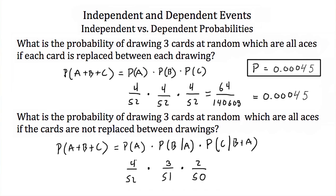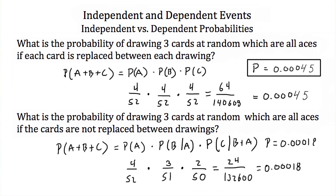4 times 3 is 12, times 2 is 24. 52 times 51 times 50 is 132,600. Doing this division, we get 0.00018. So our probability is 0.00018. Notice that the probability of the dependent events is less than the probability of the independent events. This completes the tutorial on independent and dependent events.